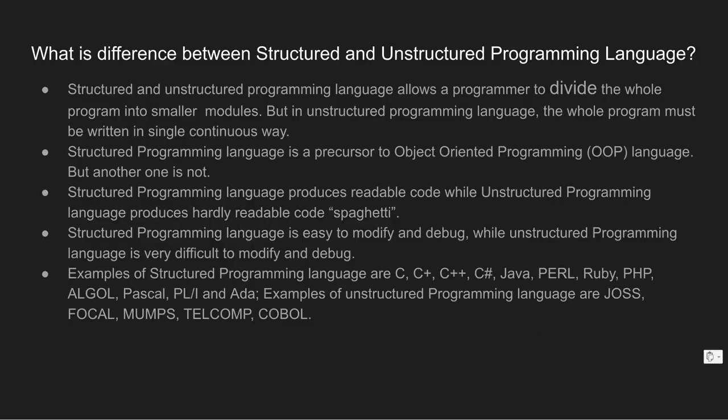The last point is examples. Examples of Structured Programming Languages are C, C++, and Java. Java can also follow Object Oriented Programming paradigm principles. For example, Java follows the imperative programming paradigm, Structured Programming Language principles, and Object Oriented Programming paradigm principles.